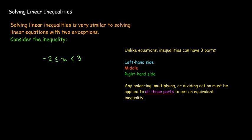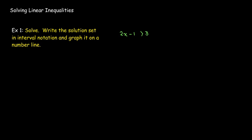Let's look at some examples. A very simple one: 2x minus 1 is greater than 3. We use balancing to get 2x greater than 4, then divide both sides by 2. Since this is a positive 2, there's no change to the direction of the inequality. So x is greater than 2. We'll graph that on a number line and then write it in interval notation.